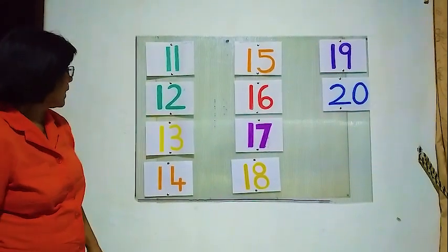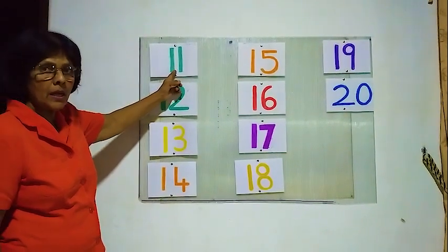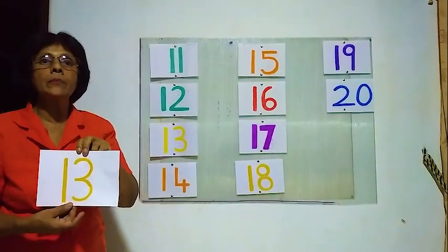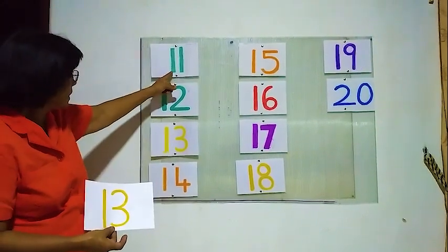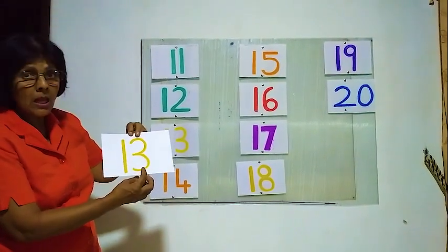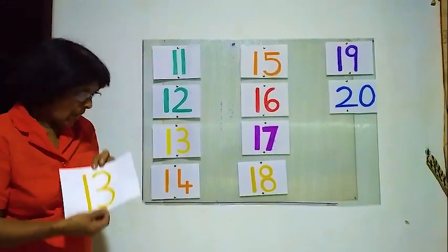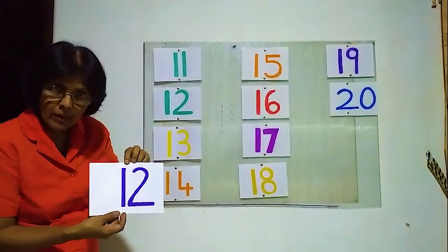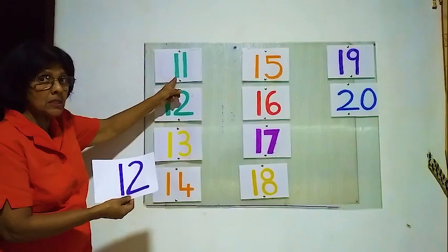So now we have to find the first number — number 11. Is this number 11? Here 1 and 1, here 1 and 3 — this is not number 11. So what we have to do, we must find number 11. You see, is this number 11? 1 and 2 — is this number 11? Yes!